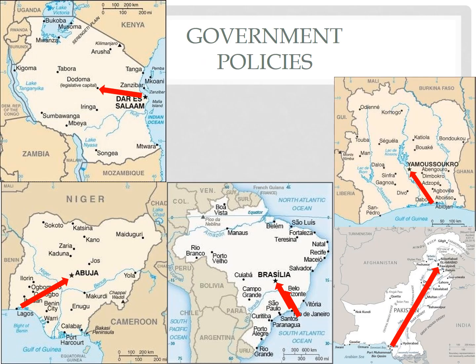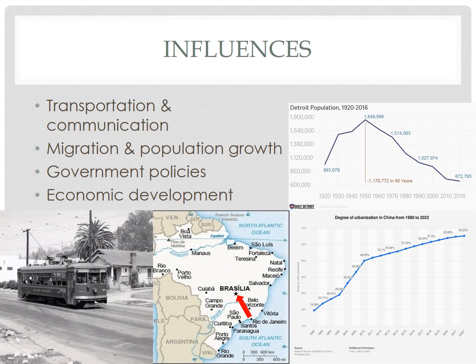Governments can also incentivize migration. Some governments in periphery and semi-periphery countries have relocated their national capital to a new city to try and draw internal migration to another location. The idea is to balance the country out geographically, typically by moving the capital city away from coastal ports to a more centrally located area. Brazil, Tanzania, Cote d'Ivoire, Nigeria, and Pakistan have all done this to try and redistribute the population more evenly. Governments are also responsible for managing the city's infrastructure, water resources, sewage, and garbage disposal, and when too many people migrate to a city, policymakers must address issues like poverty, slums, and public safety.